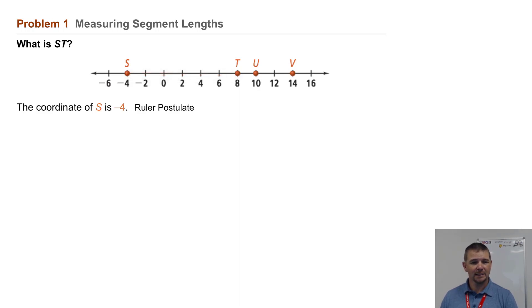The coordinate of point S is -4 by the Ruler Postulate, and the coordinate of point T is 8, again by the Ruler Postulate.